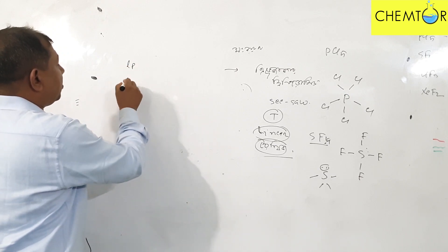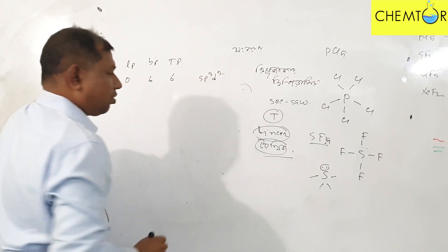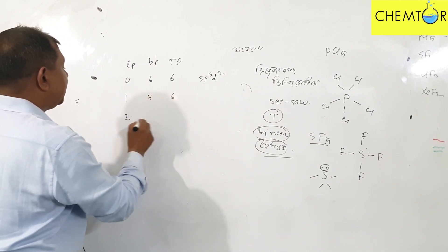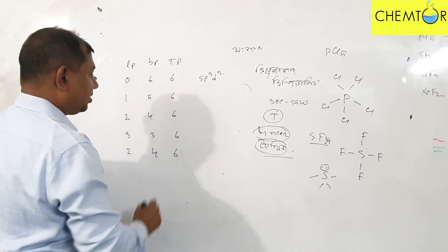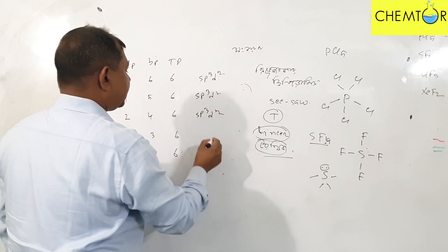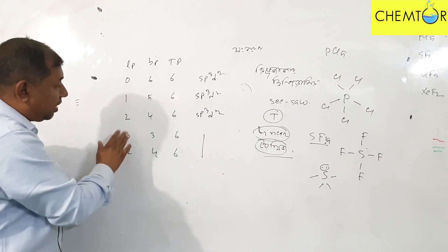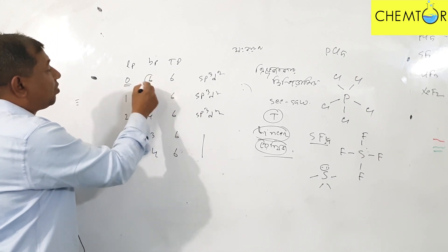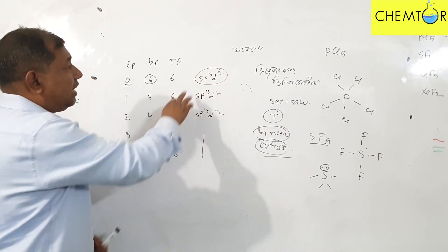Now, the lone pair is 0 and the bond pair is 6, and the total pair is 6. Then lone pair is 1 and bond pair is 5, total 6. Then lone pair is 2 and bond pair is 4, total 6. Then lone pair is 3 and bond pair is 3, total 6. The hybridization in this case is sp3d2.